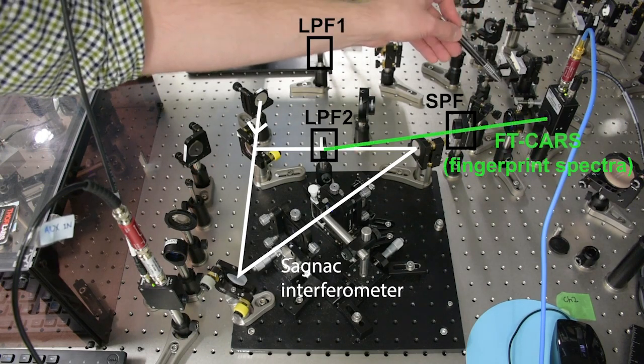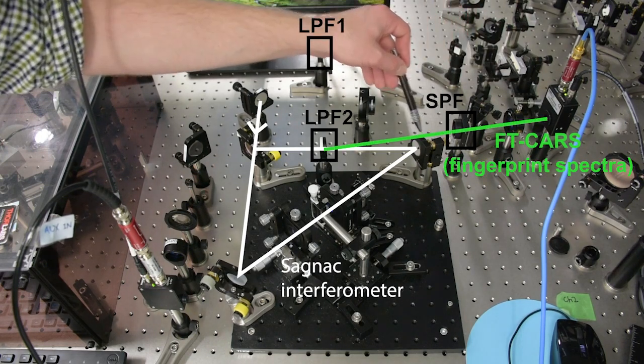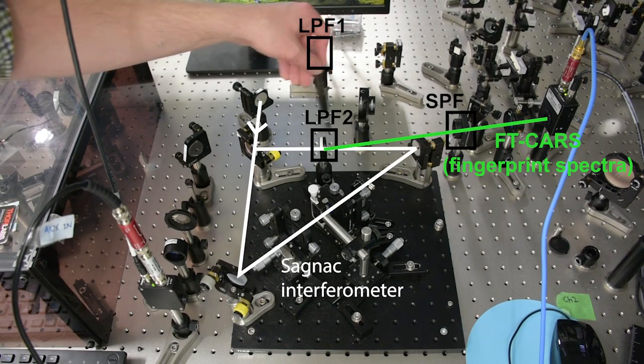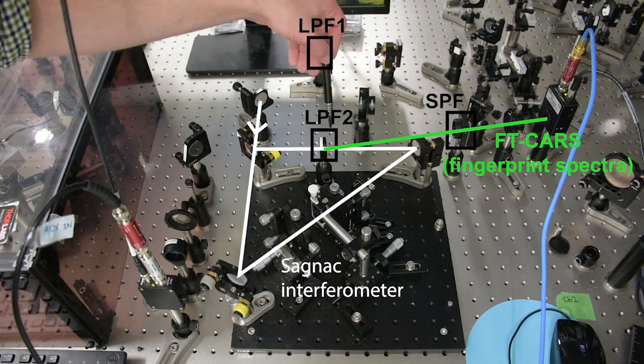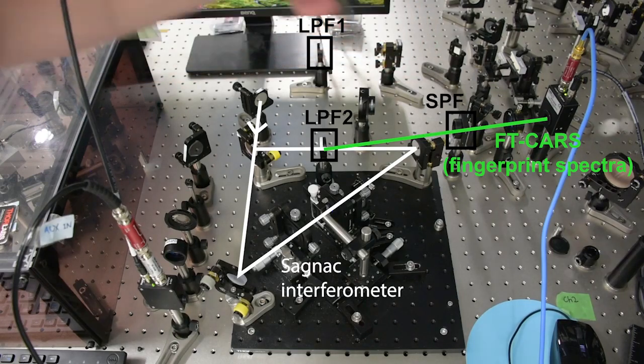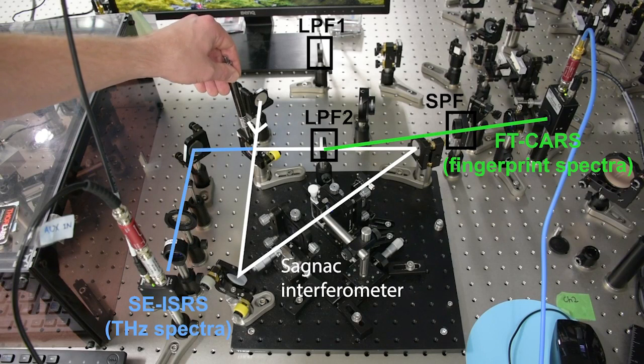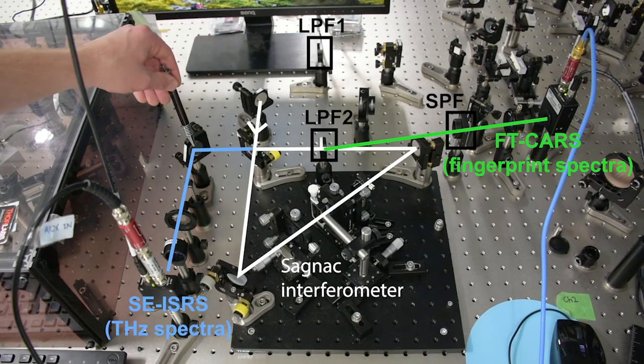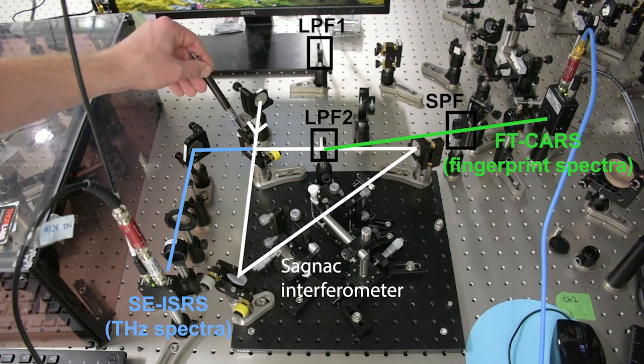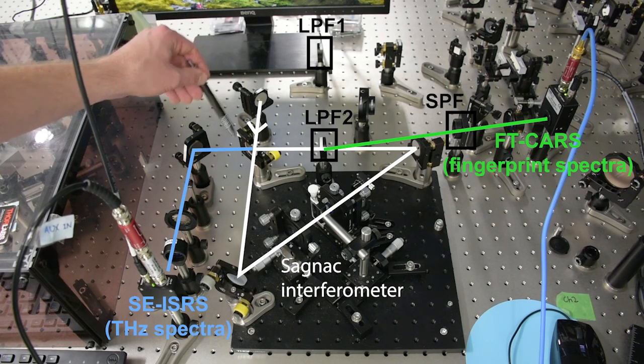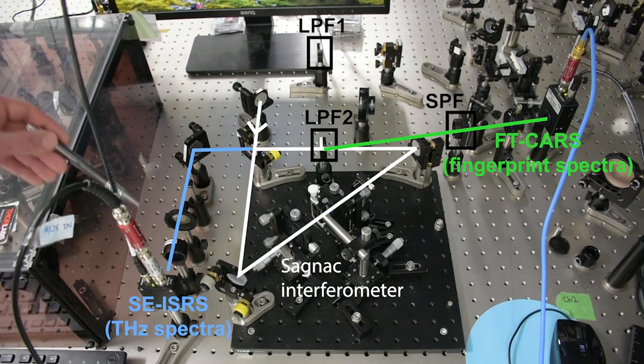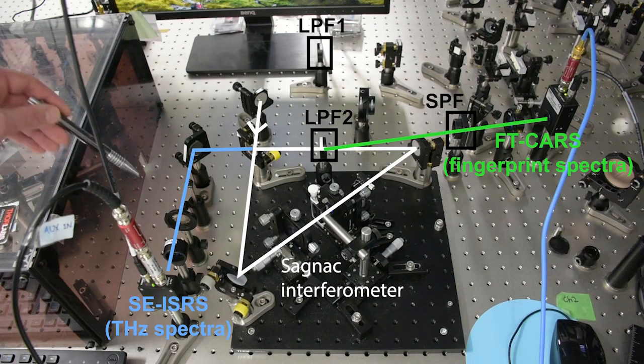Here's the APD which detects FT-CARS. At this long-pass filter in the Sagnac interferometer, the reflected signal is the frequency-shifted probe signal and passes through this short-pass filter. At the Sagnac interferometer exit in this direction, we have the interference of the local oscillator and the phase-delay-shifted probe. That interference is detected at this photodetector as SEISRS.